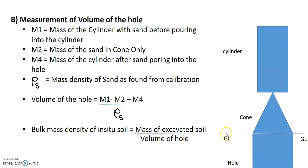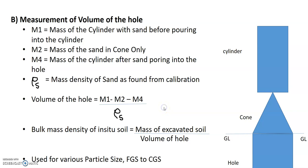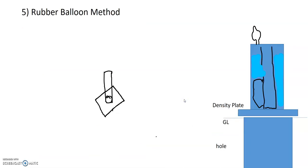The bulk mass density is calculated using the mass of the excavated soil divided by the volume of the hole. This method is suitable for both fine-grained soil and coarse-grained soil. Next, let's talk about the Rubber Balloon Method. For this method, we need a density plate.